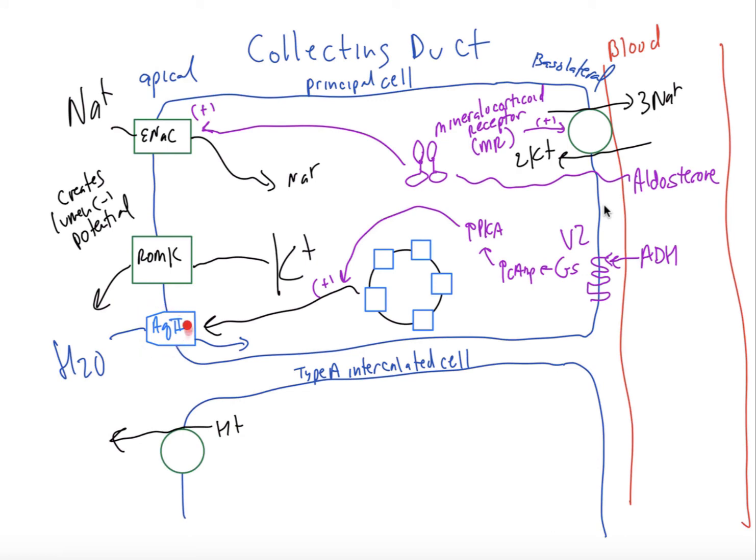Also I want to point out that there's water channels. These are special ones. These are aquaporin-2 that are inserted in the membrane from vesicle storage. And that process of water reabsorption is regulated by the posterior pituitary hormone antidiuretic hormone or vasopressin, which binds to its seven transmembrane spanning receptor. It's called the V2 receptor, which is coupled to Gs, increases cyclic AMP and protein kinase A activity, which promotes the insertion of these aquaporin channels and promotes water reabsorption.